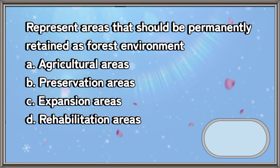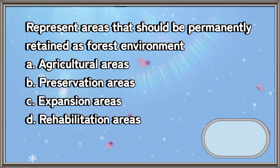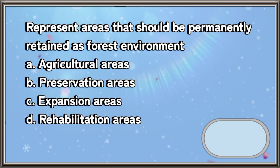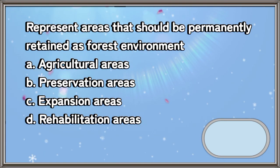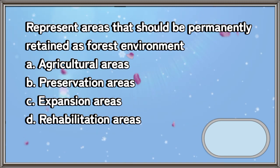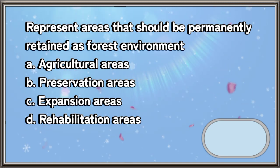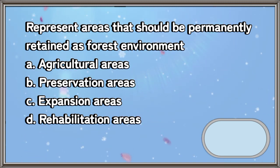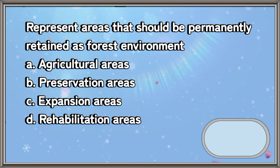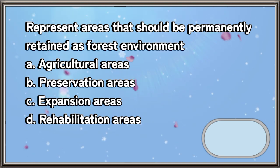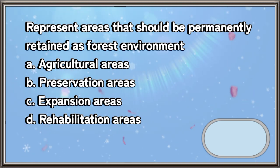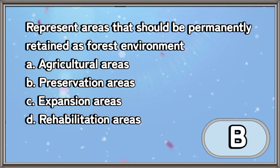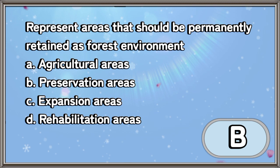Represent areas that should be permanently retained as forest environment. A. Agricultural areas. B. Preservation areas. C. Expansion areas. D. Rehabilitation areas. The answer is letter B.